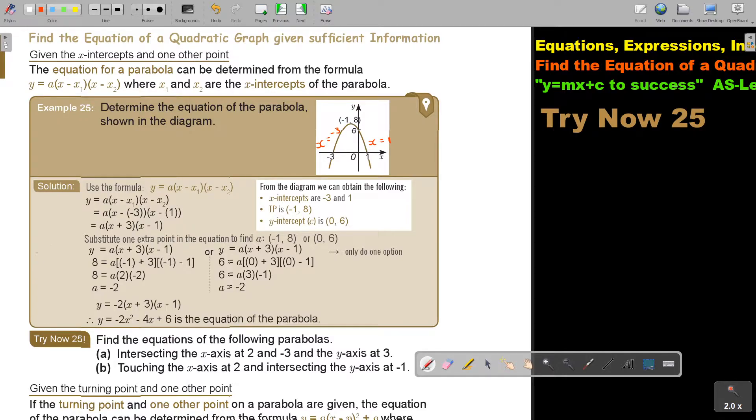So I substitute, I get the value of A, and then I'm just putting it back. And then I can multiply this out to form that X squared X without an X equation, but I can also leave it like that. I want you to stop the video and I want you just to do Try Now 25. You can continue the video as soon as you are finished.